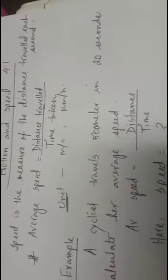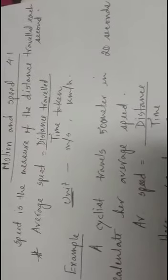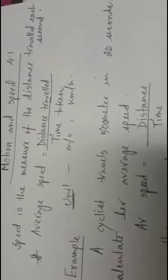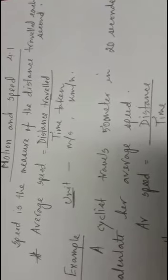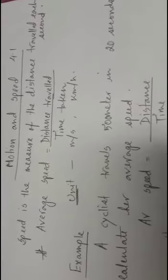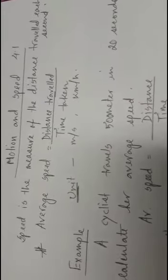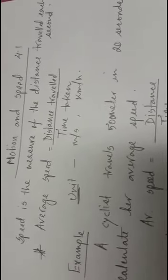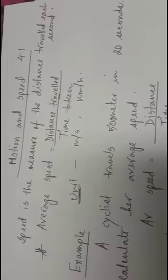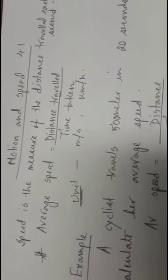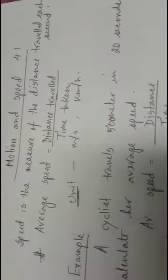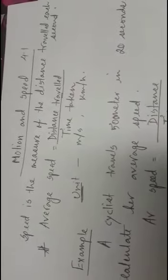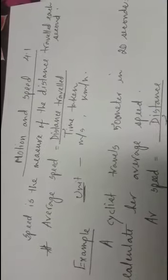We use one formula for calculating speed, and the formula is: average speed equals distance traveled divided by time taken. There are some units that we use for speed — meter per second and kilometer per hour. If the moving object covers a longer distance, we use kilometer per hour.